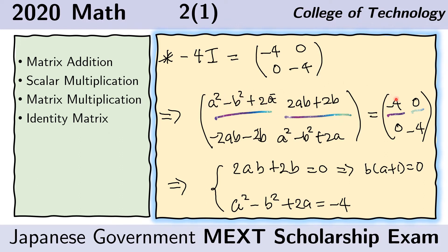This equals the first term here, this equals the second term, this equals this term, and this term equals this term. If you look closely, both of the equations from the first row are actually the same as the equations in the second row. And so we only have 2 equations coming out from this relationship.